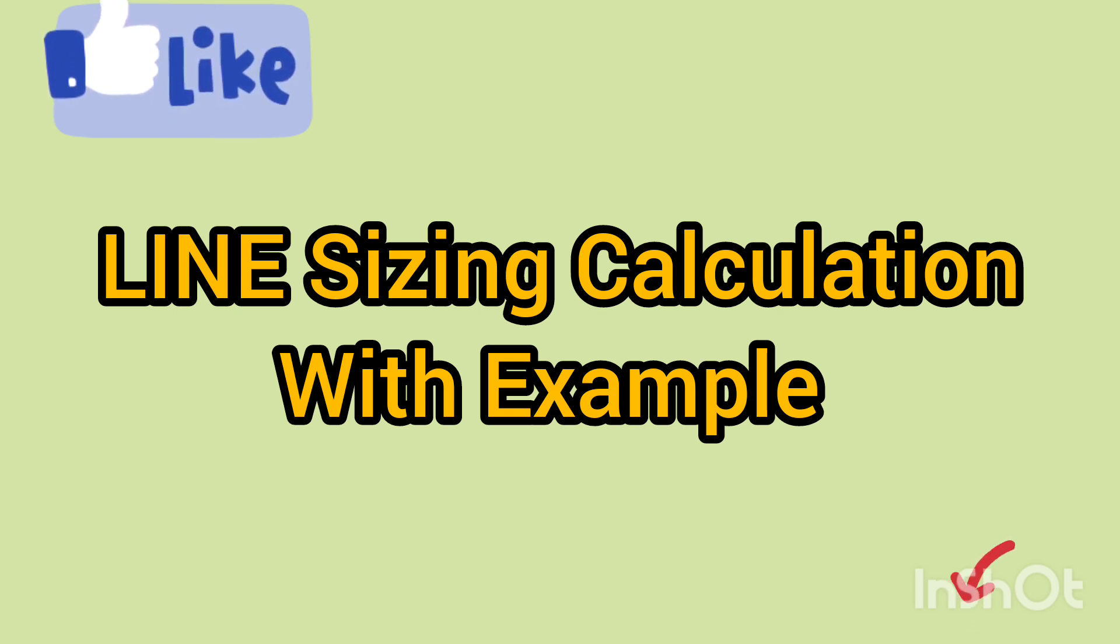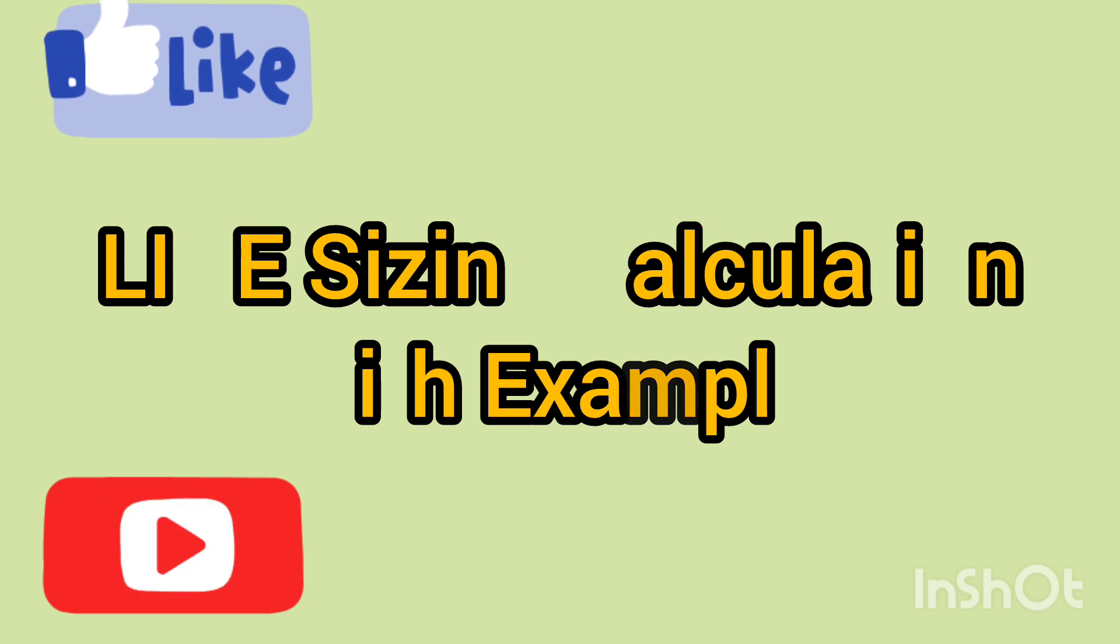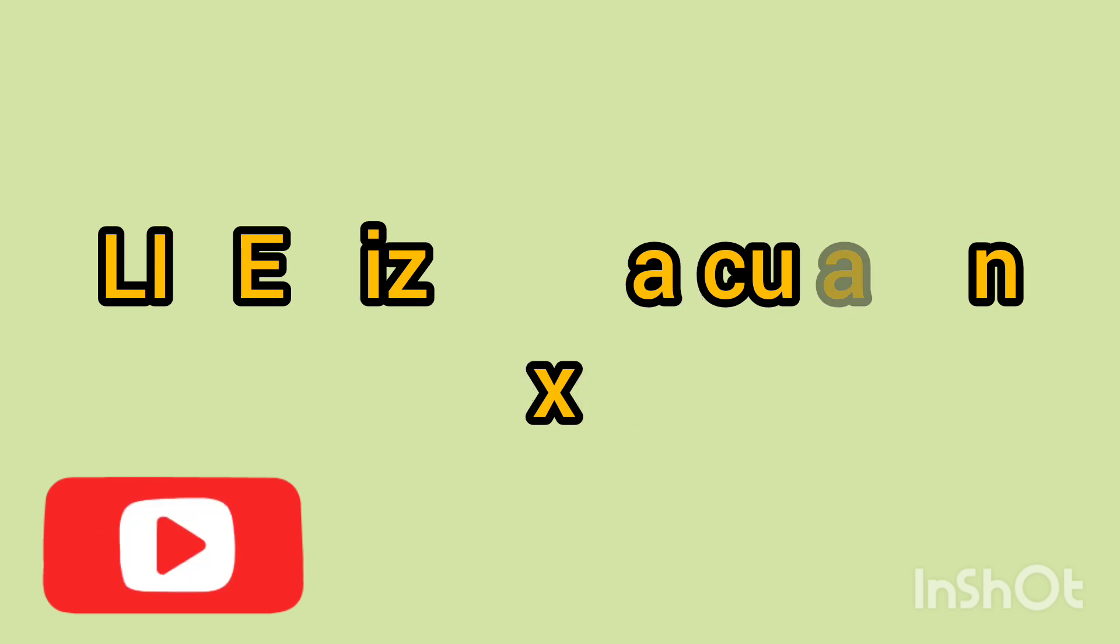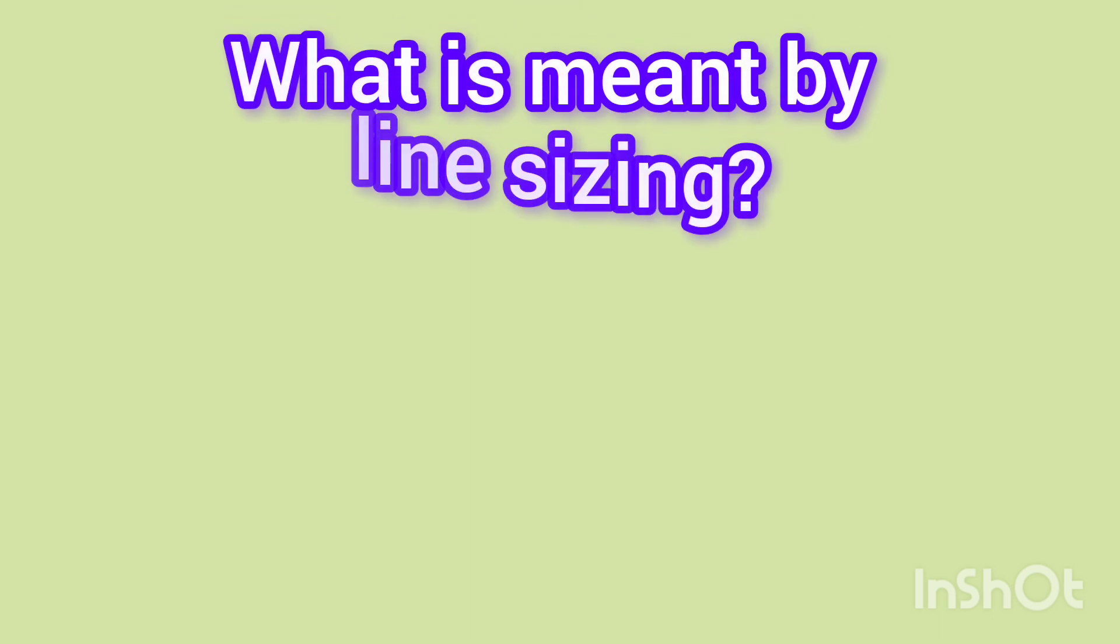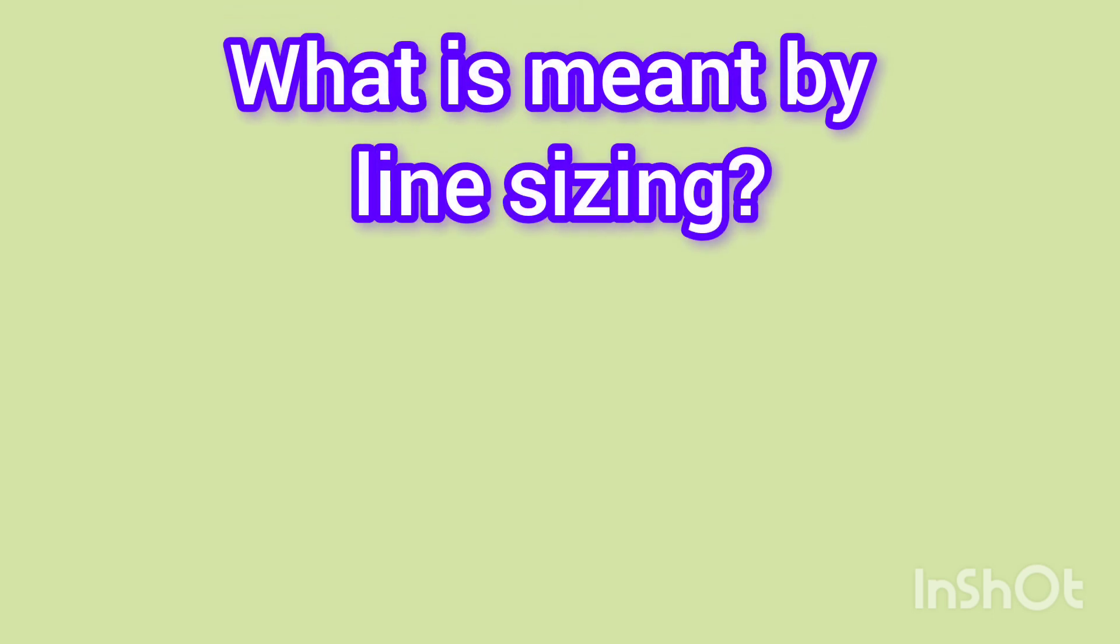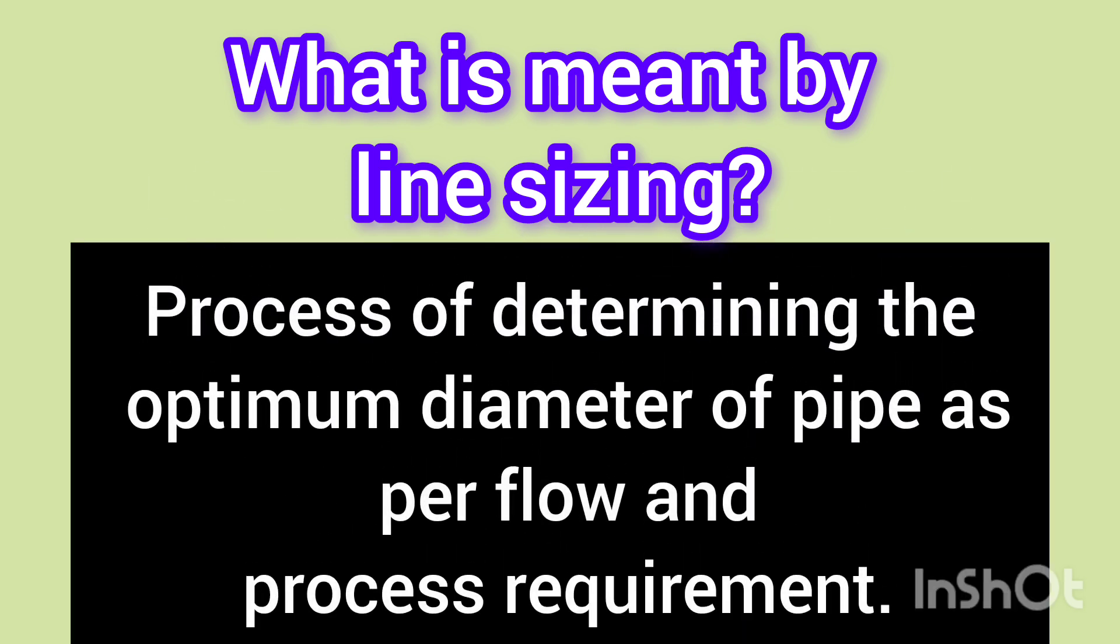So let's get started. First, let's talk about what exactly is line sizing. Line sizing is the process of determining the appropriate diameter of pipes or pipelines used in fluid transportation systems. It's a crucial step in industries such as oil and gas, chemical, fertilizer and more.